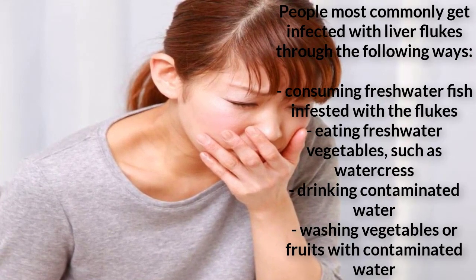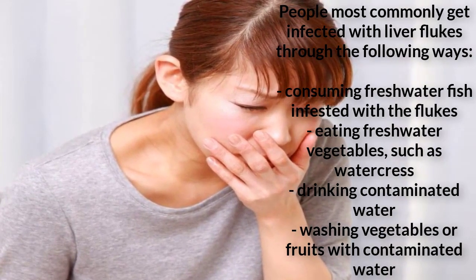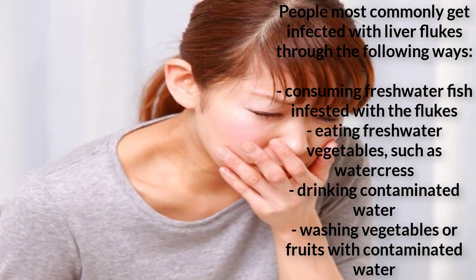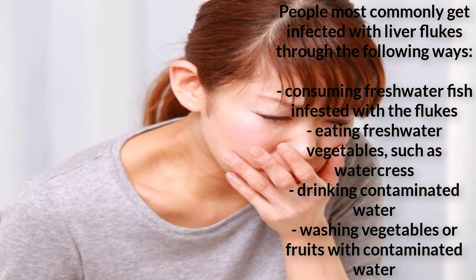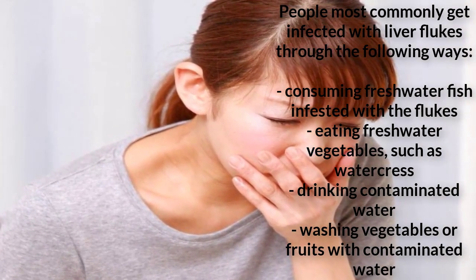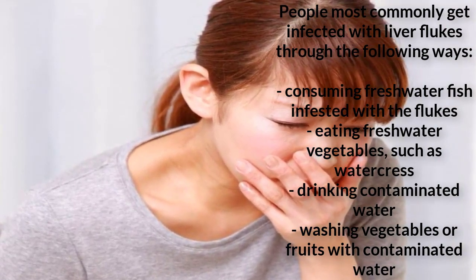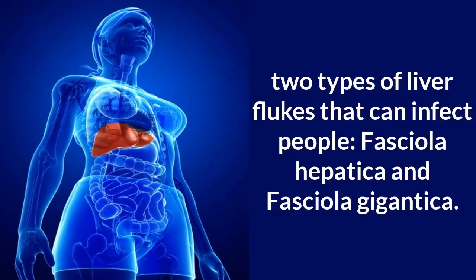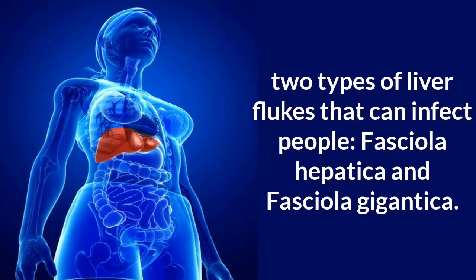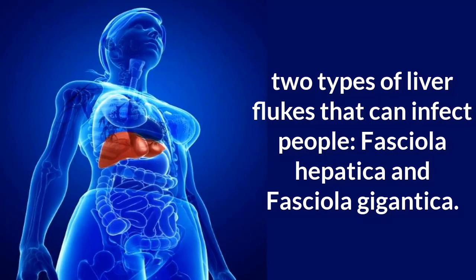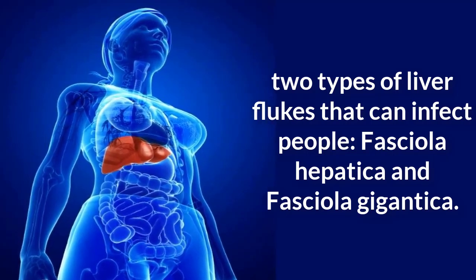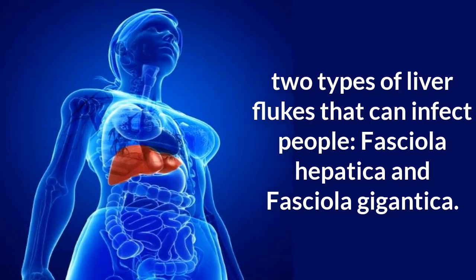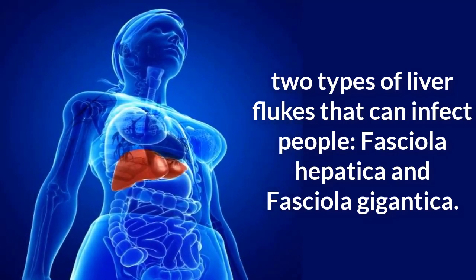What diseases can they cause? The scientific name for liver flukes is Fasciola, and the disease they cause is called fascioliasis. The Centers for Disease Control and Prevention have identified two types of liver flukes that can infect people: Fasciola hepatica and Fasciola gigantica. A person may have liver flukes living in them and never develop fascioliasis. Others may develop fascioliasis many years after the liver flukes entered their body.